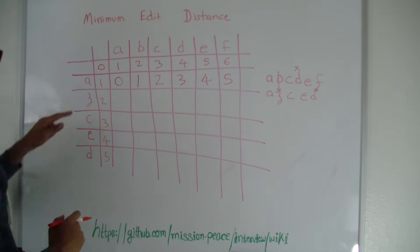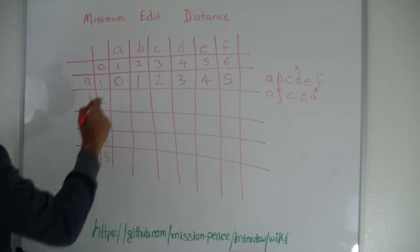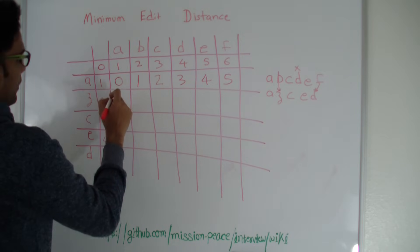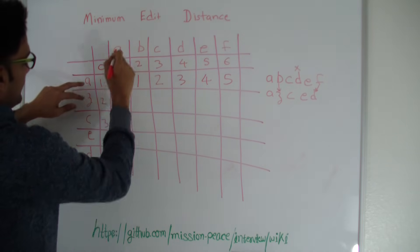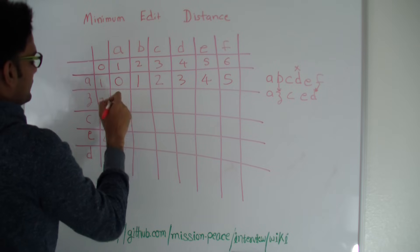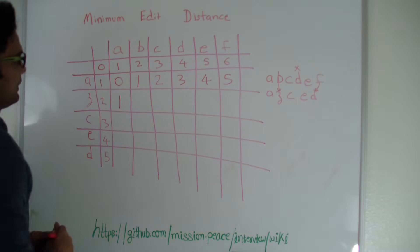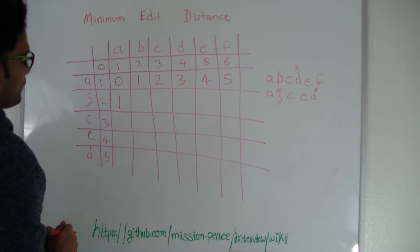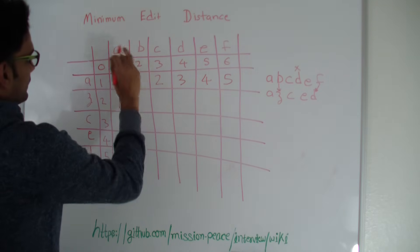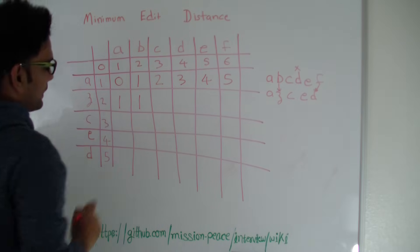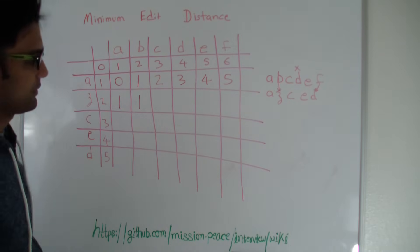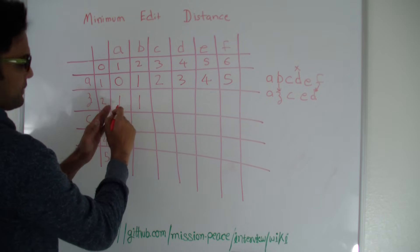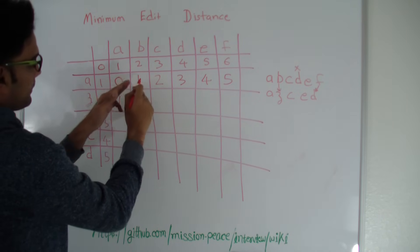Let's fill up this row. If we had string A and AZ, it would take one operation to convert A into AZ — which is adding a Z. If we had string AB and AZ, it would again take one operation to convert AB to AZ. The way we come up with this number is you look at what is on the left, what is diagonally up, and what is at the top, and take the minimum of the three.